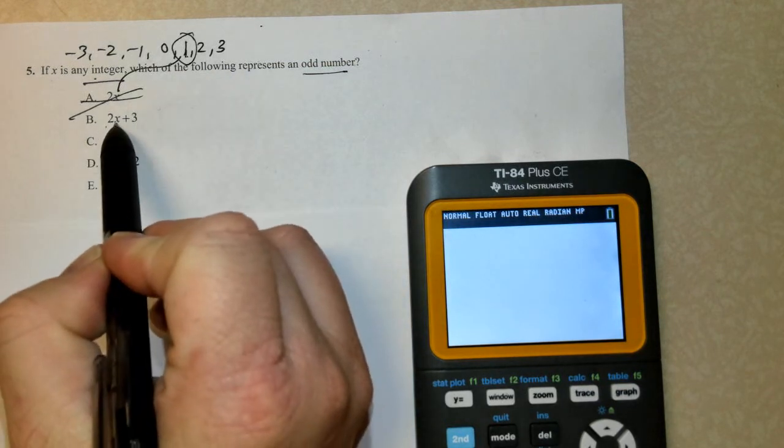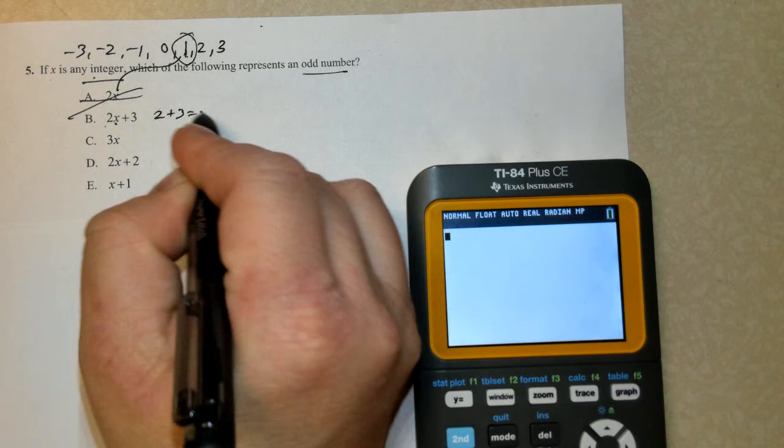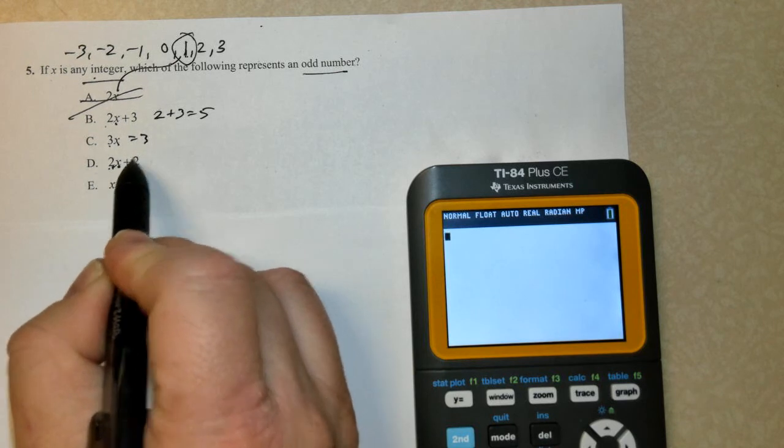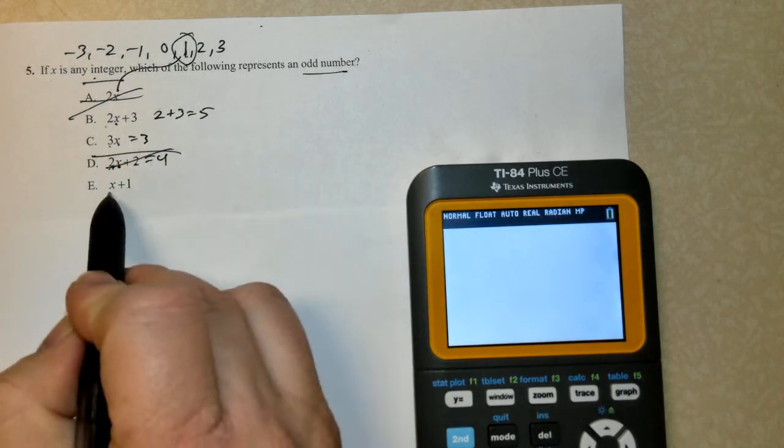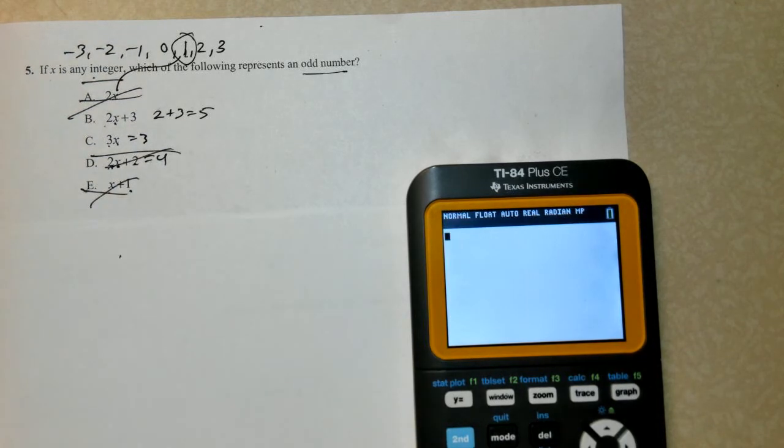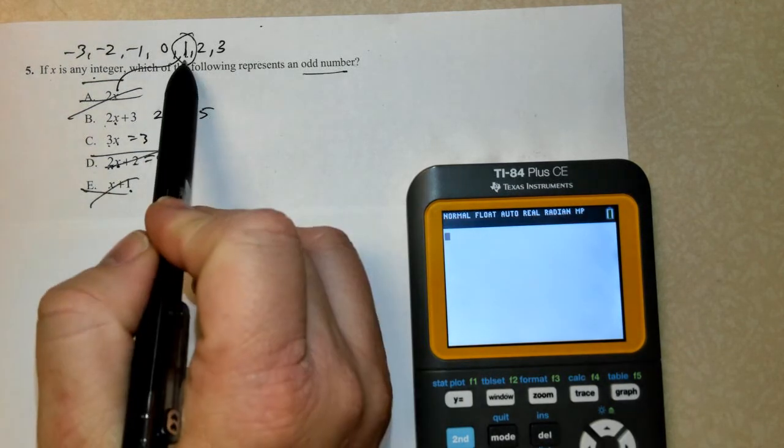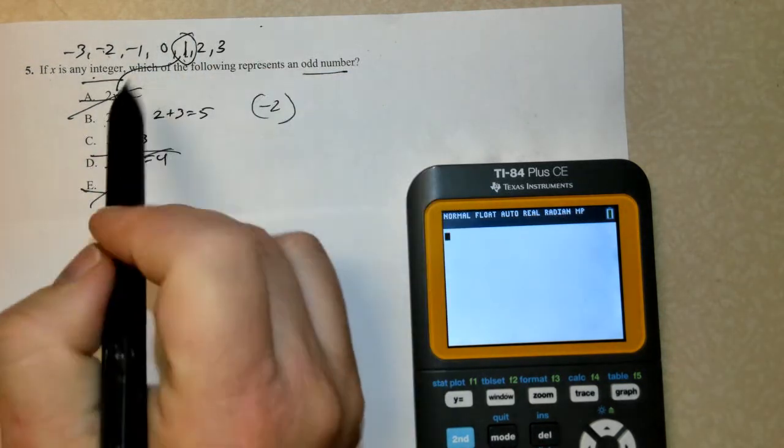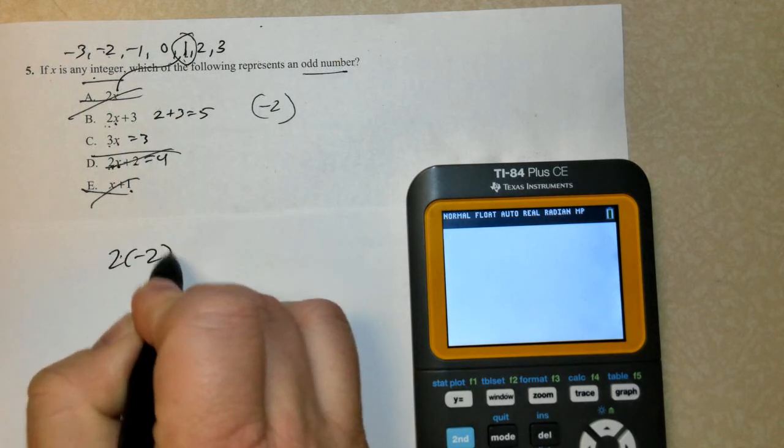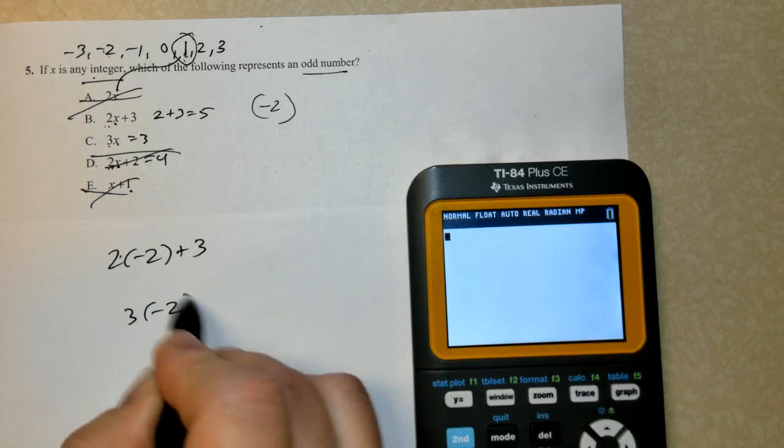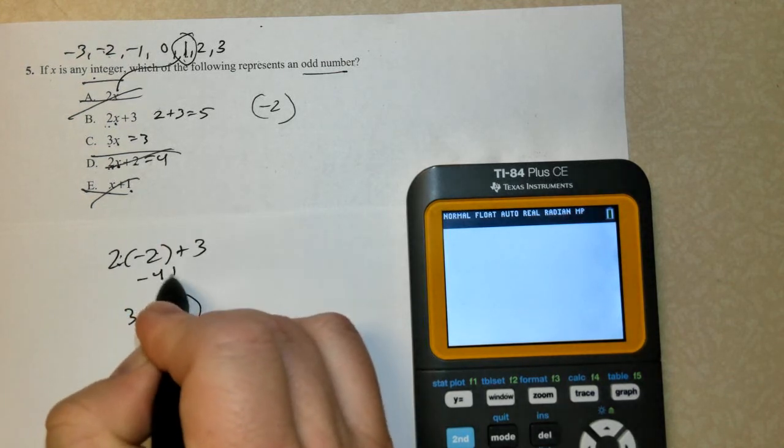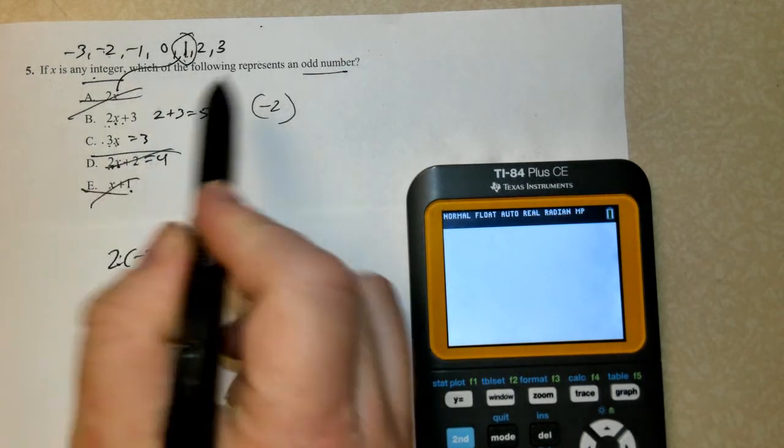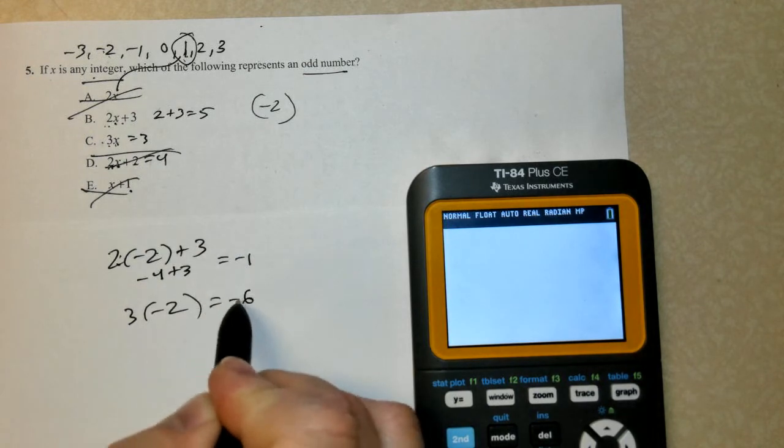Plug in 1. 2 times 1 is 2 plus 3 is 5. That could work. 2 times 1 is 3. That could work. 2 times 1 is 2. 2 plus 2 is 4. 4 is even. And 1 plus 1 is 2. So I have a 50% chance of getting it right. So I just tried an odd number. I'm going to switch over here and try an even number that's negative. I'm going to try negative 2. So negative 2 times negative 2 plus 3, and then 3 times negative 2. So this gives us negative 4, and negative 4 plus 3 is negative 1. Still an odd number. That would work. The next one is 3 times my negative 2 option. That's negative 6. That's an even number. Correct answer.